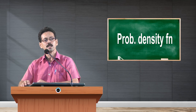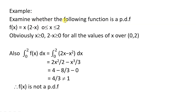You can verify whether a given function is a PDF with the help of an example. Examine whether the following function is a PDF: f(x) = x(2 − x), where x lies between 0 and 2. Obviously, (2 − x) is greater than or equal to 0 for all values of x in [0, 2]. So for any value of x between 0 and 2, the function value is positive.